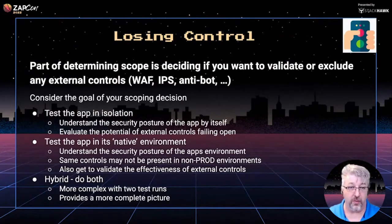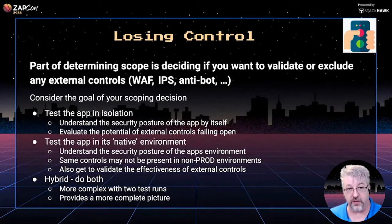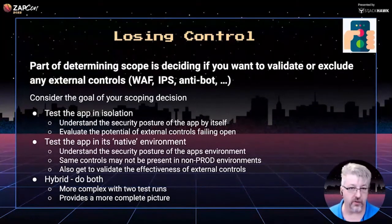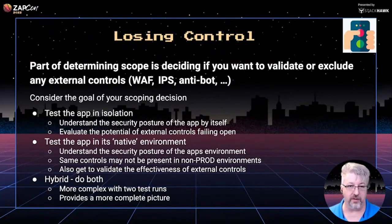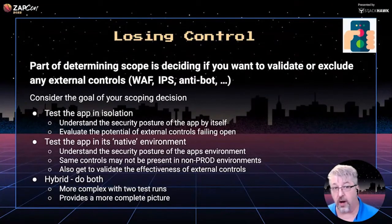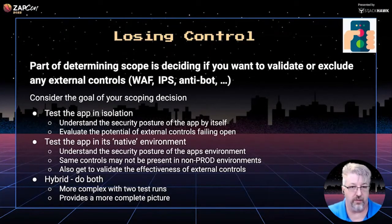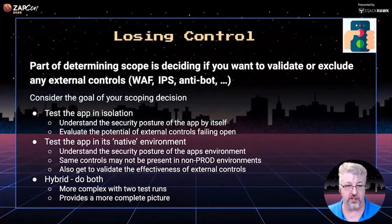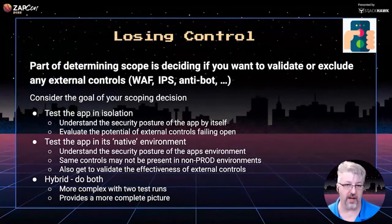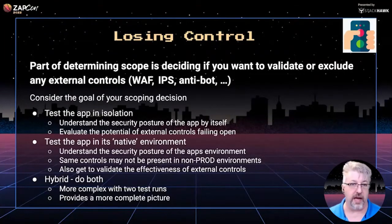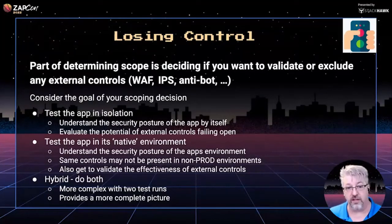Let's talk about losing control or bringing controls into scope. Beyond testing the web application itself, there's usually infrastructure between that app and the internet that may include control points — a WAF, a load balancer, anti-bot, CDN. The big decision is: do you want to test those controls in scope or not? Do you want to know what would happen if the application was an island and all secondary controls went away — how rugged would it be? Or do you want to validate that your load balancer slows down excessive requests? Both are valid. There's not a right answer — it really depends on what the goal of your test is. You could do both — test with controls and without controls.